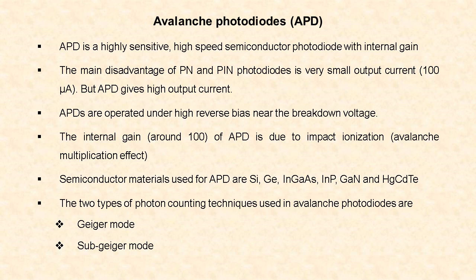Hence, there is no need for amplification. Avalanche photodiodes are operated under high reverse bias near the breakdown voltage. The internal gain of these diodes is around 100, and this internal gain is due to impact ionization, that is the avalanche multiplication effect. The semiconductor materials used for avalanche photodiodes are silicon, germanium, indium gallium arsenide, indium phosphide, gallium nitride, and mercury cadmium telluride.